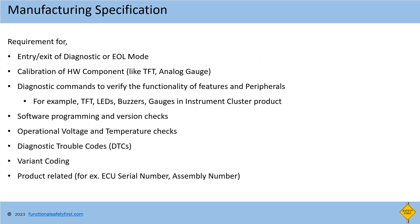Manufacturing specification contains steps for entering into diagnostic mode and exiting from diagnostic mode, calibration of hardware components — for example, requirements for calibration parameters for TFT, analog gauges, and buzzers for instrument cluster — and diagnostic commands to verify the functionality of features and peripherals. For example, diagnostic commands for controlling and reading the status of TFT, LEDs, buzzers, and gauges in the instrument cluster product using diagnostic commands.